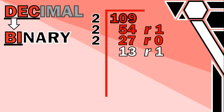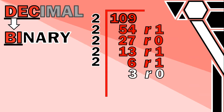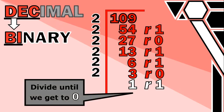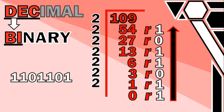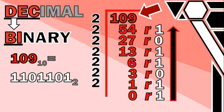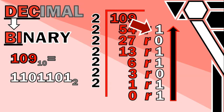Continuing: 13 ÷ 2 = 6 remainder 1. Then 6 ÷ 2 = 3 remainder 0. Then 3 ÷ 2 = 1 remainder 1. We must keep going until the result is 0 — a 1 is not 0, so we continue: 1 ÷ 2 = 0 remainder 1. Now we're at 0, so we stop. We look at all those remainders from the bottom up: 1, 1, 0, 1, 1, 0, 1 — giving us 1101101. So 109 in decimal equals 1101101 in binary.